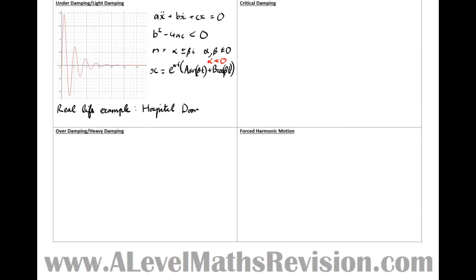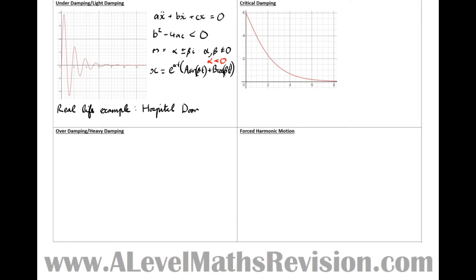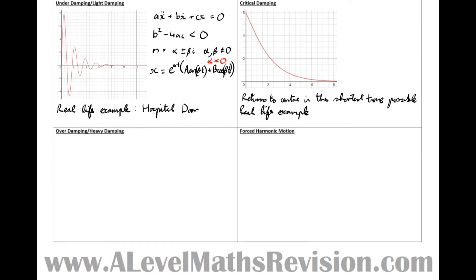Now let's have a look at critical damping. The main feature of critical damping is that the particle returns to the center of oscillation in the shortest time possible. A real-life example of critical damping would be the needle on the speedometer of a car — we want it to return to its true position in the shortest time possible. If it shoots up from zero to 50 miles an hour, we don't want it to oscillate around 50; we want it to go straight to 50 without passing. So the car speedometer is the real-life example.